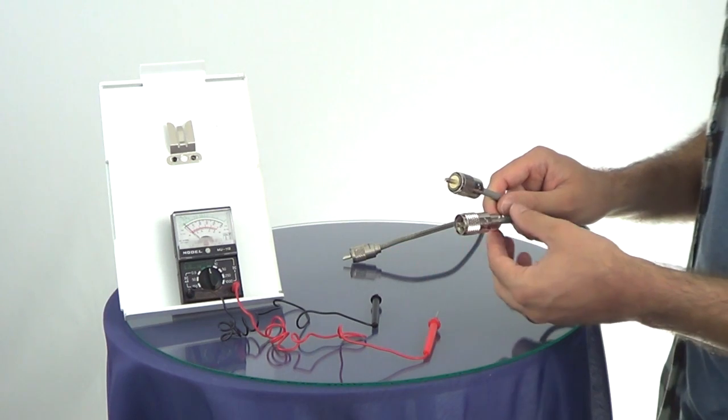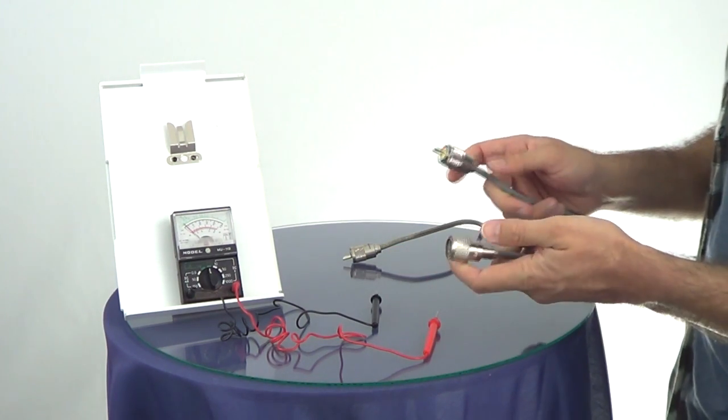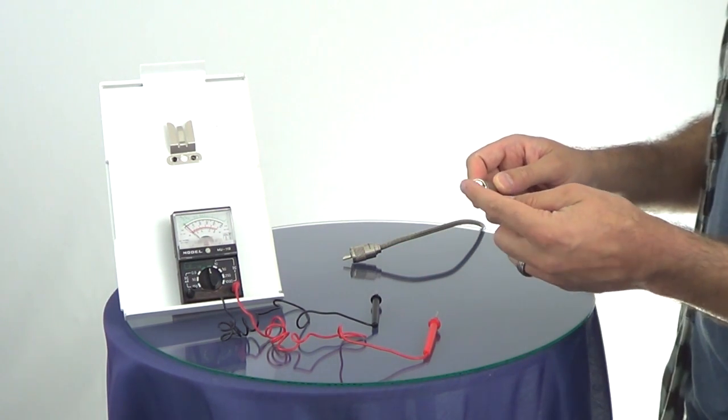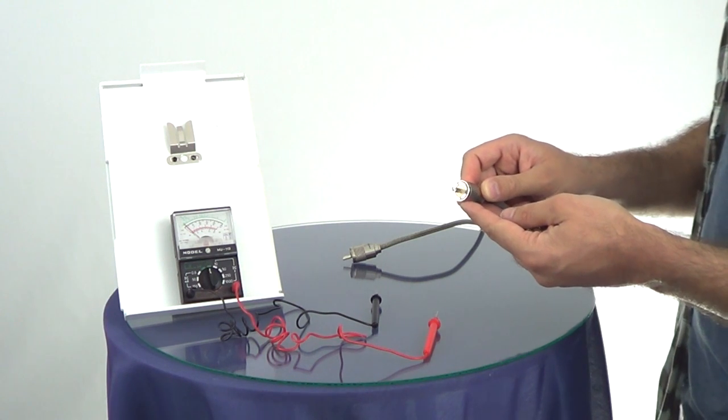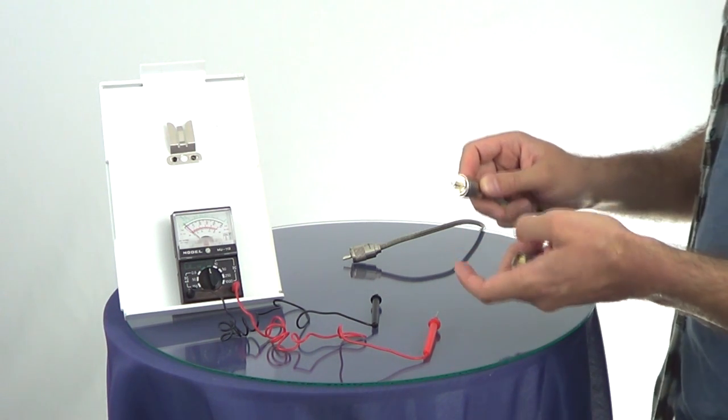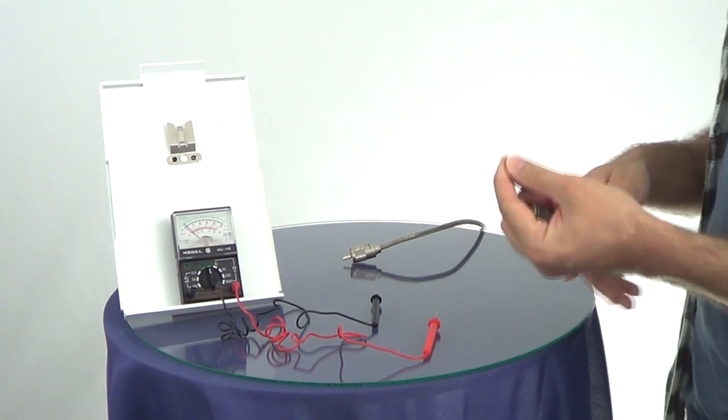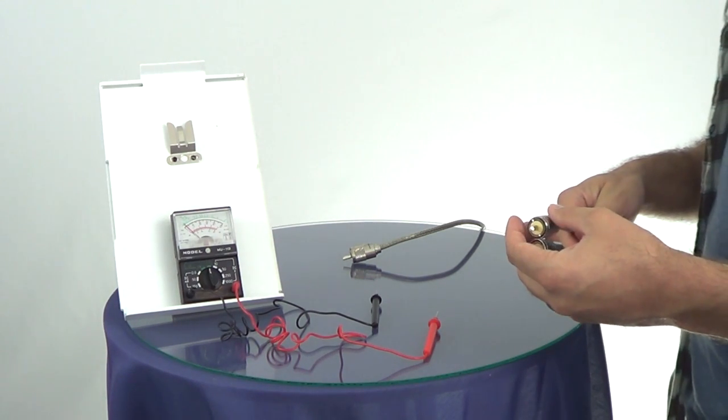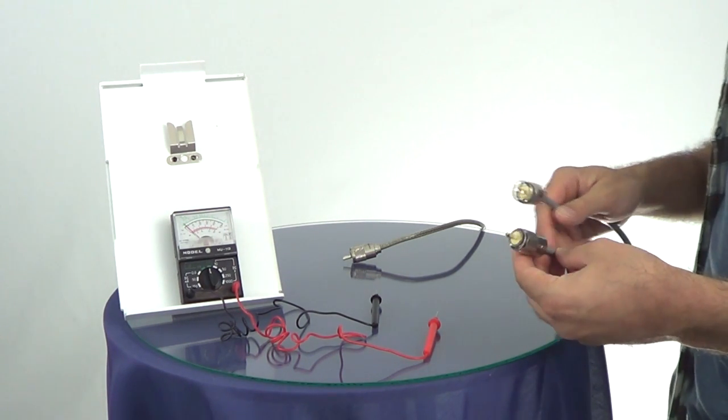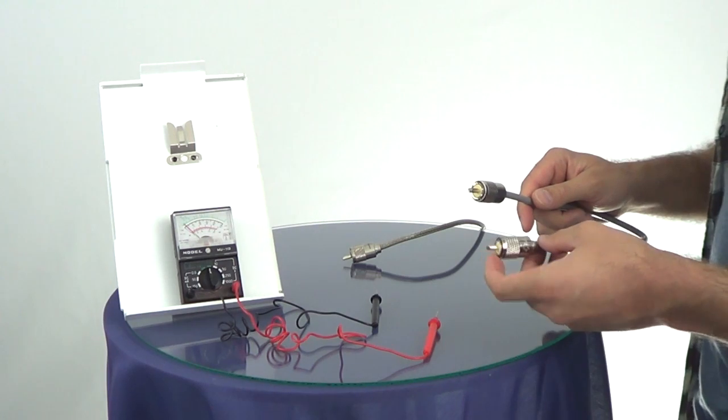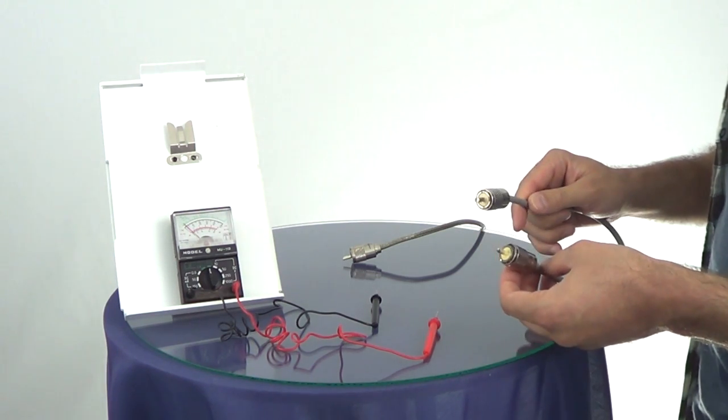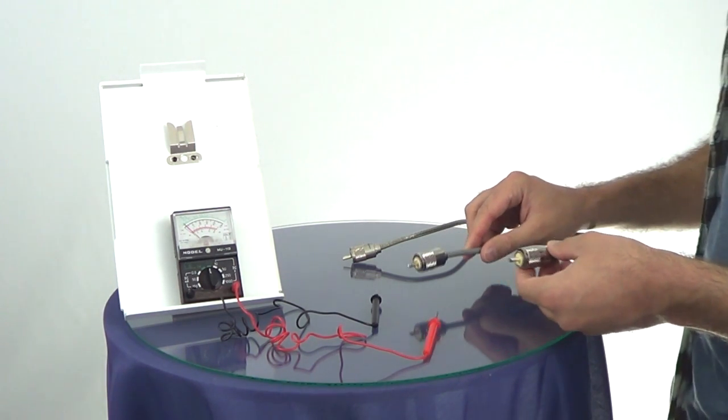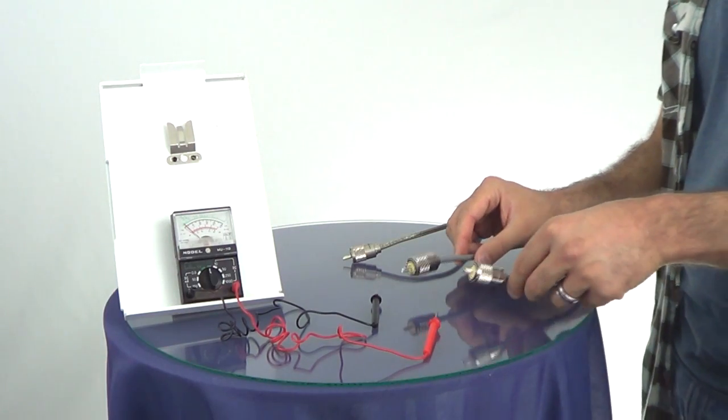And then from shield to shield on the cable, again you want there to be continuity. And then you're going to test from center to the shield and there you do not want continuity. Now the only time that that isn't true is when you're working with a no ground plane system. You wouldn't be able to test that system with the methods we're showing here. This is for standard CB.